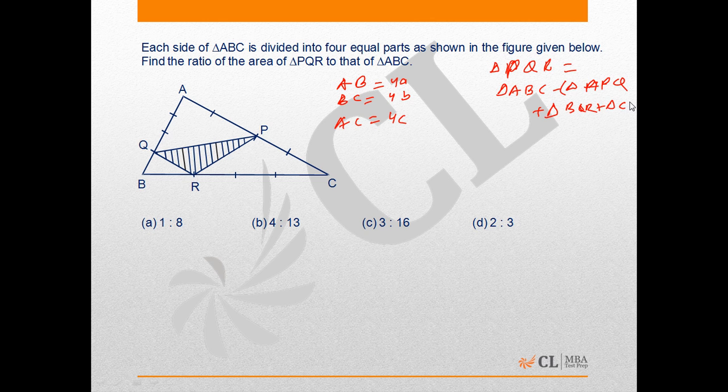According to the proportionality theorem, the area of triangle APQ to the area of triangle ABC will be in the ratio of the product of sides.